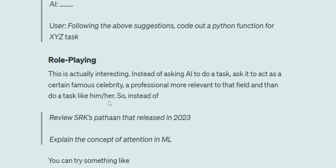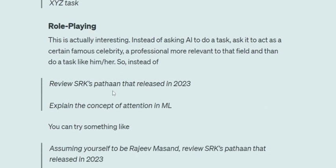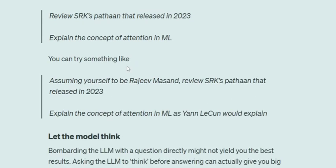The second one is role playing. This is actually interesting and you can also change the tone of the answers, which is why I love it the most. In role playing, instead of asking AI to do a task straight away, ask it to act as a particular celebrity or professional that is more relevant to that field, and then ask it to do the task. For example, instead of 'Review SRK's Pathaan that released in 2023,' try 'Assuming yourself to be Rajeev Masand' — a big Indian cinema critic — 'review SRK's Pathaan that released in 2023.' Or 'Explain the concept of attention in ML as Yann LeCun would explain it' — Yann LeCun being the head of AI at FAIR Meta. Role playing will improve your answers by a huge margin. During image generation, this also becomes very important when you want different styles.